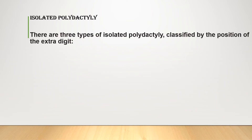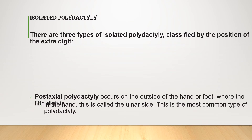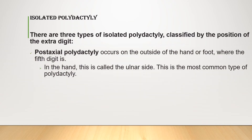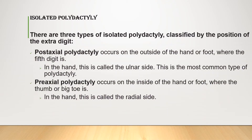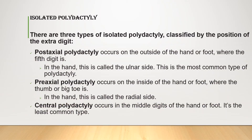For isolated polydactyly, there are three types classified by the position of the extra digit: postaxial polydactyly, preaxial polydactyly, and central polydactyly. Postaxial polydactyly occurs on the outside of the hand or foot where the fifth digit is — also called the ulnar side on the hand — and this is the most common type.